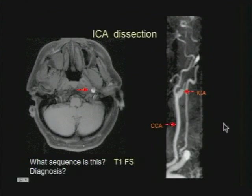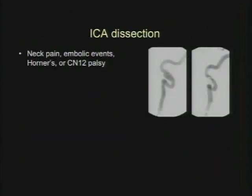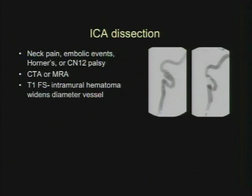Here's some anatomy: your common carotid, your external carotid, your subclavian artery, and your vertebral artery. ICA dissection can present with neck pain, embolic events, watershed ischemia, Horner's syndrome, and even cranial nerve 12 palsy. You can evaluate with CTA or MRA — remember if you do an MRI to include the fat-saturated sequence. These can be spontaneous or post-traumatic.